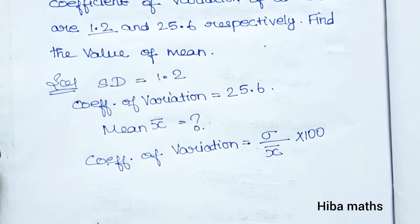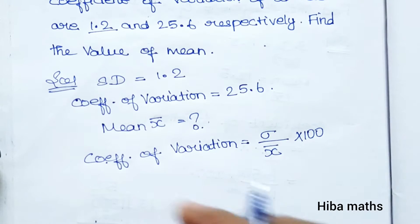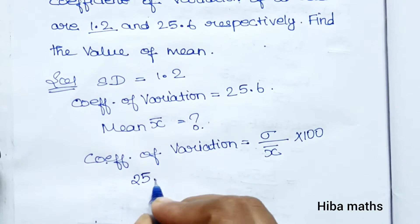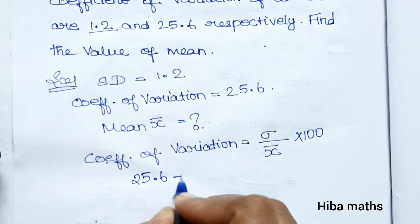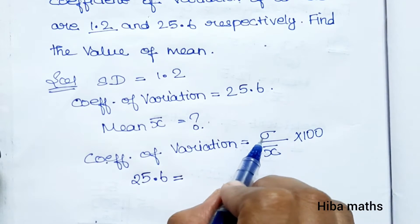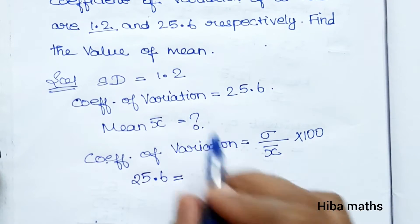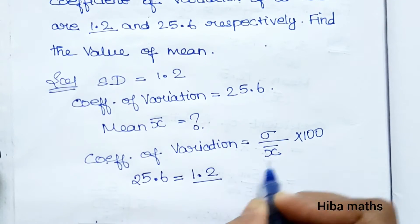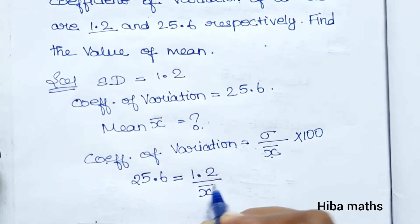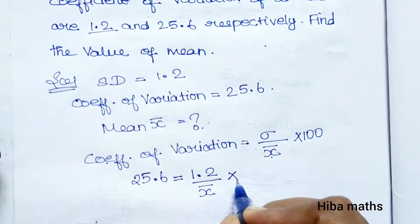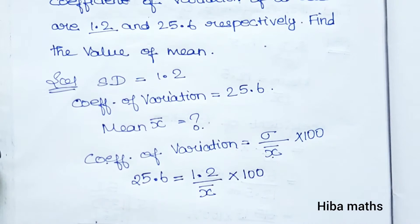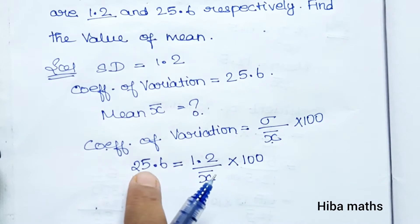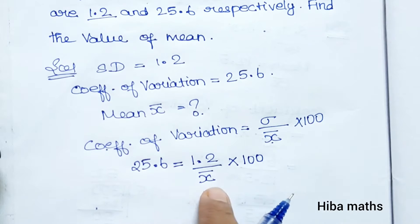Applying the formula: coefficient of variation = 25.6, which is equal to standard deviation 1.2 divided by mean (x-bar), into 100. From this we can find the value of x-bar.